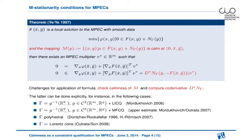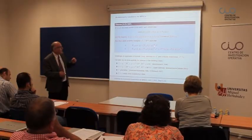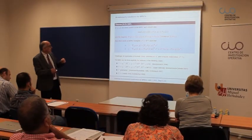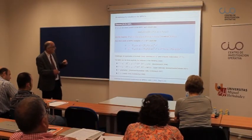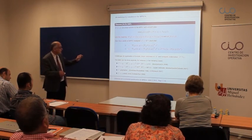This has been done first in a well-known paper by Ye and Ye. Here you see that if x-bar, y-bar is a local solution to this MPEC, you can derive under this constraint qualification the existence of a so-called MPEC multiplier such that this equation is satisfied and such an inclusion is satisfied.